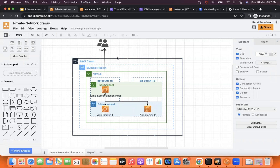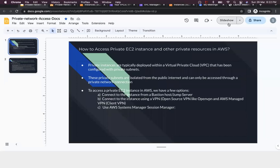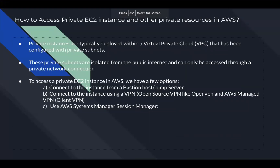If you see my diagram, this is an AWS environment in the Mumbai region. We have a VPC, and inside the VPC we have two subnets — one public subnet and one private subnet. In the private subnet we have two EC2 instances: app server one and app server two. The customer wants to access these two EC2 instances. We have multiple ways: connect via a jump server like a bastion host, use open source like OpenVPN, AWS managed client VPN, or use AWS SSM System Manager.